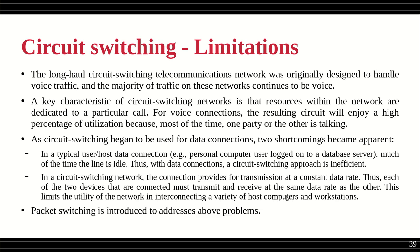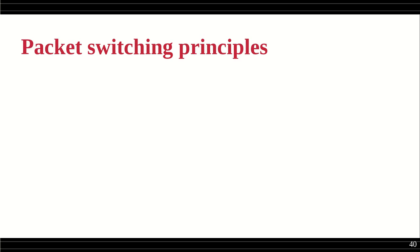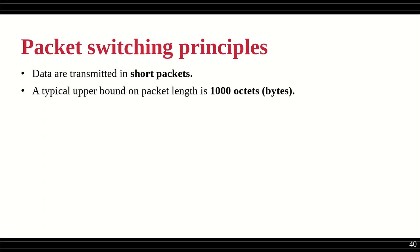To solve these two issues, packet switching was introduced to address these problems. In packet switching, when we have a long message, the first thing is we divide that information into small packets. In circuit switching there is no such division — the entire message is communicated from sender to receiver without any packaging concept. Here, the information is divided into packets, and data is transmitted in short packets. The typical upper bound of a packet could be around 1000 octets.